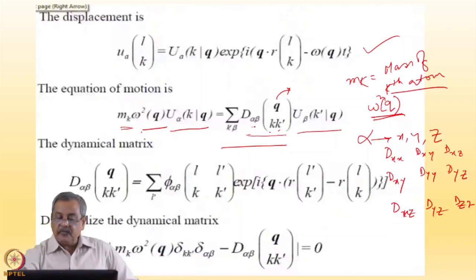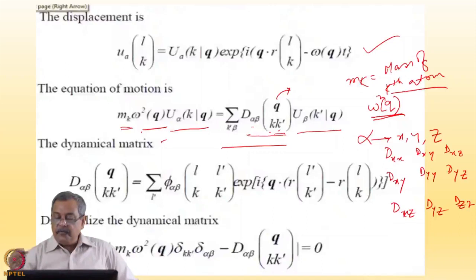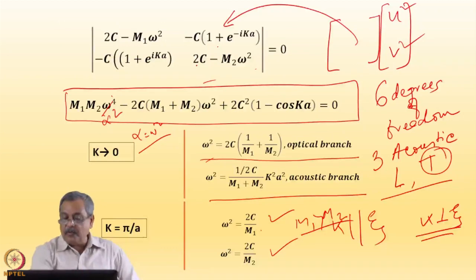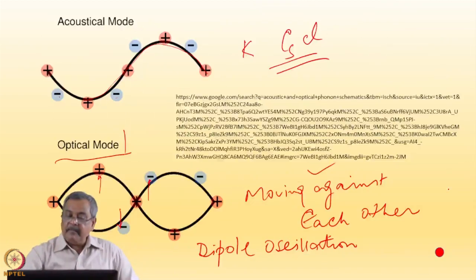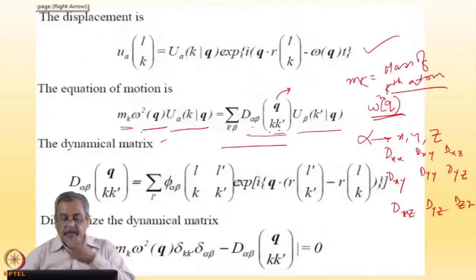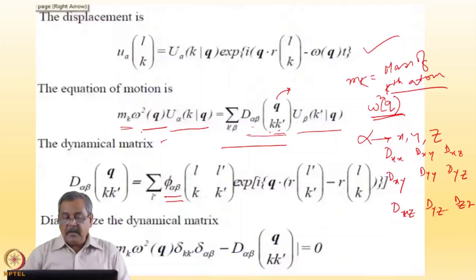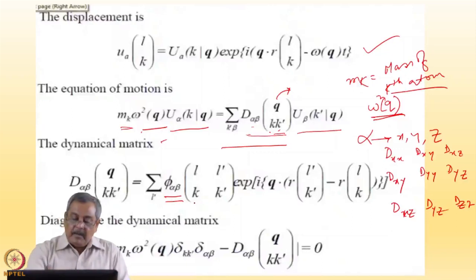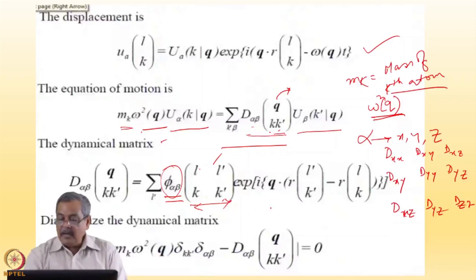The dynamical matrix dictates the force. If you remember in earlier simpler examples, I used a force constant c. Now I replace it with a more generalized, mathematically compact expression. The force constant is φ_αβ — the direction x, y, z — so α, β will dictate that. The force between the k-th atom in the l-th cell and the k'-th atom in the l'-th cell: these are the direction-dependent interactions. I have used e to the power i·q·(r − r'), where this is the equilibrium position of the k-th atom in the l-th cell and r' is for the k'-th atom at the l'-th cell.